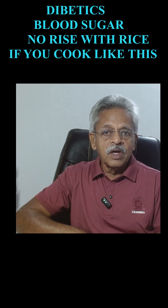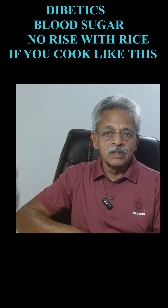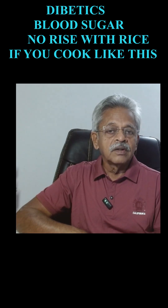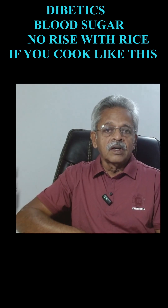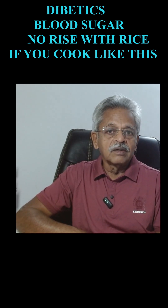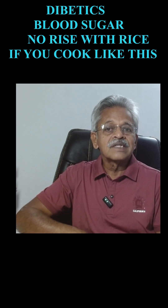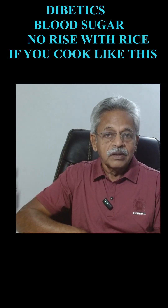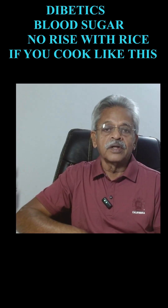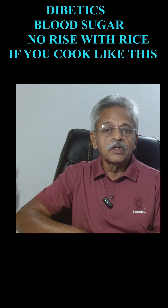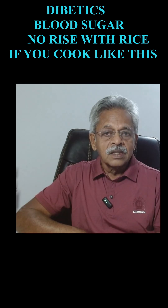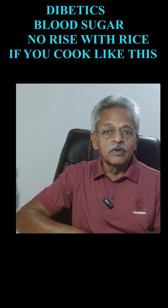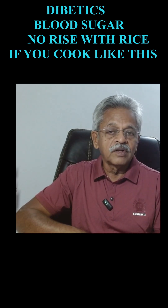Remember one thing: the way you cook can modify the GI. For example, raw uncooked potato has a GI of around 50. A potato half-boiled with skin will be around 60 to 70. If you mash the potato, it will be around 80. And if you bake the potato, it will be around 110 — that means it is more than glucose. So the way you cook a food will change the GI of that food.